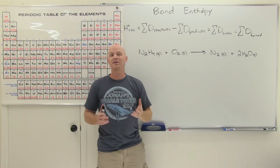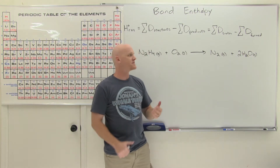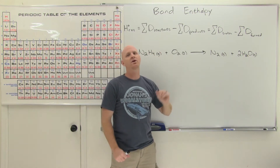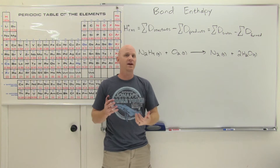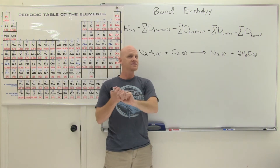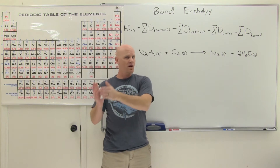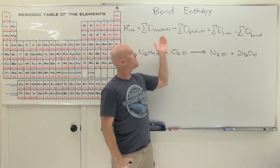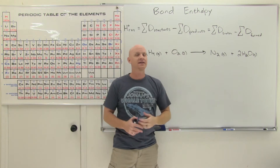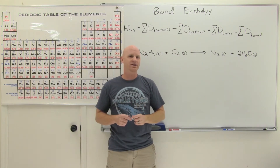Bond enthalpy, also called bond energy or bond dissociation energy, is going to be the topic of this lesson. We now have a third tool in our arsenal to calculate delta H of a reaction. A couple chapters ago we learned about Hess's Law and enthalpies of formation, which were products minus reactants. With bond enthalpy it'll actually be reactants minus products — another plug-and-chug way to calculate delta H.